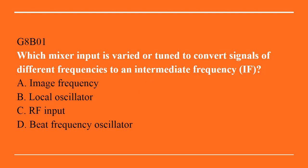G8B01: Which mixer input is varied or tuned to convert signals of different frequencies to an intermediate frequency? A. Image frequency. B. Local oscillator. C. RF input. D. Beat frequency oscillator. Answer is B. Local oscillator.